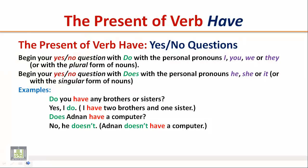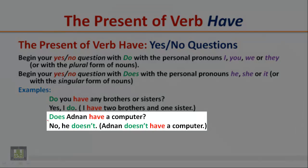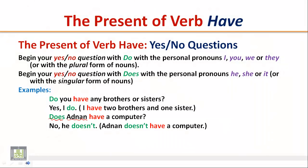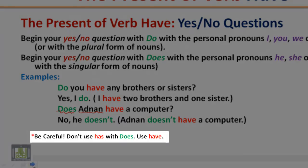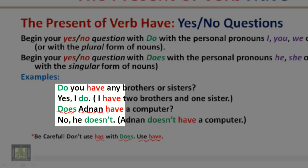Pay attention to the word order in yes/no questions: we start with the auxiliary verb followed by the subject. Be careful — do not use 'has' with 'does.' Use 'have' instead. After the subject, we use the base form 'have.'